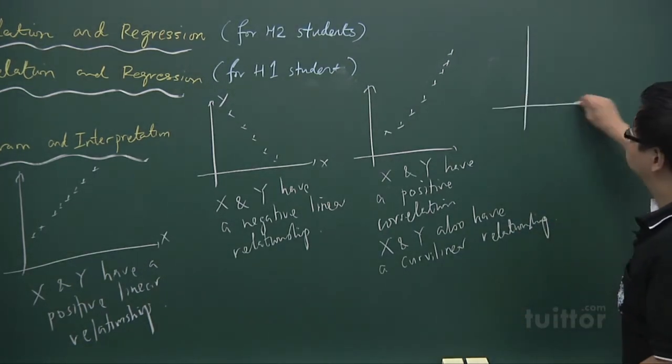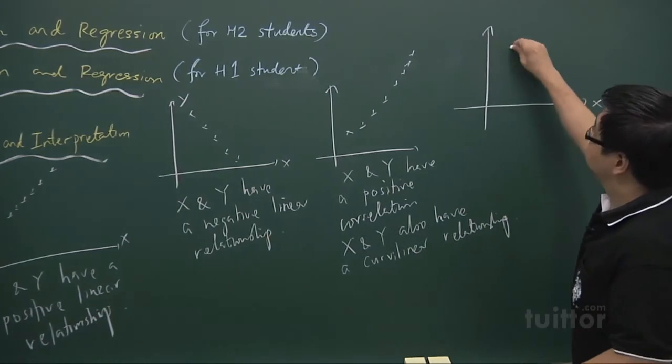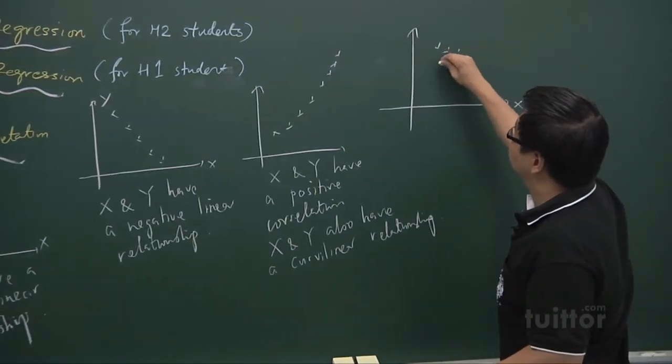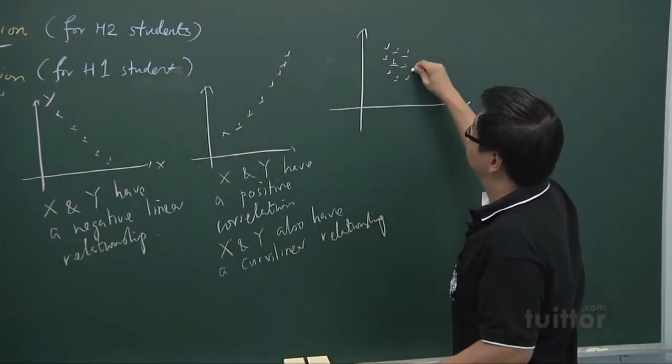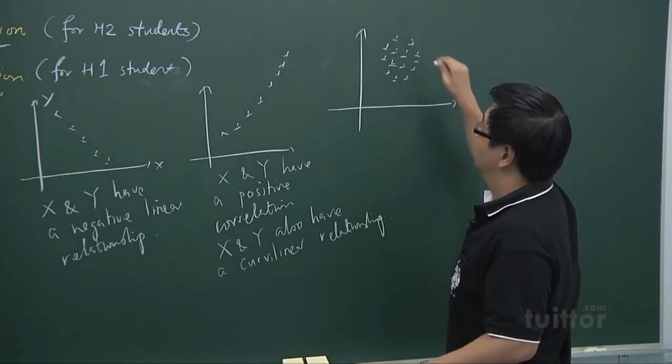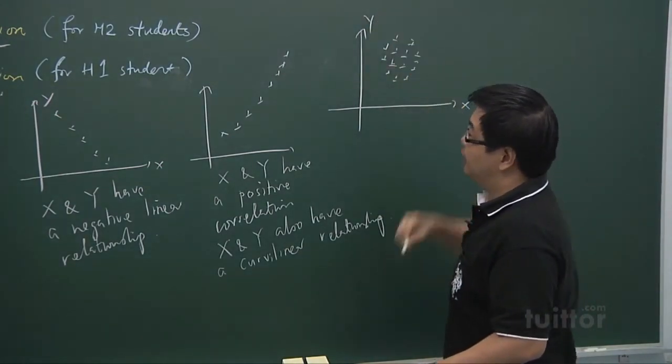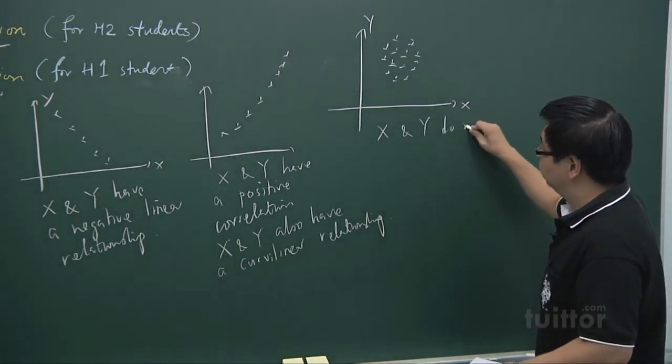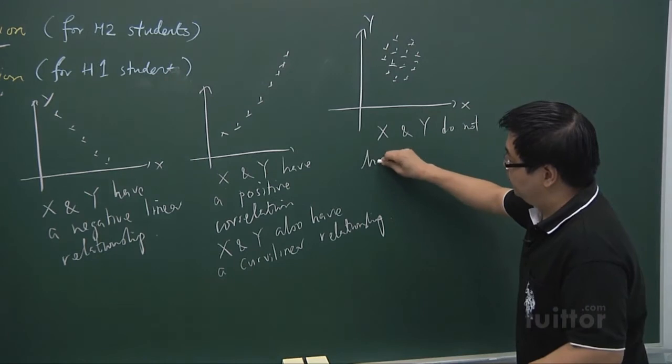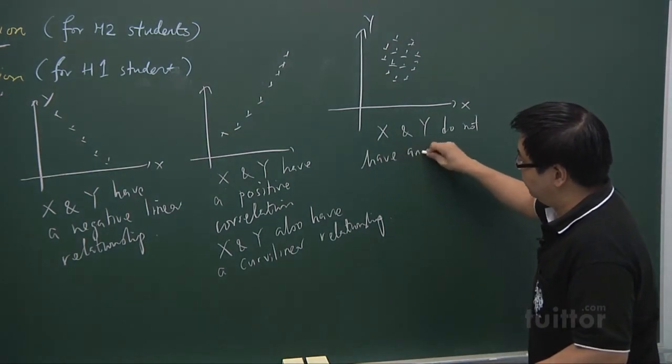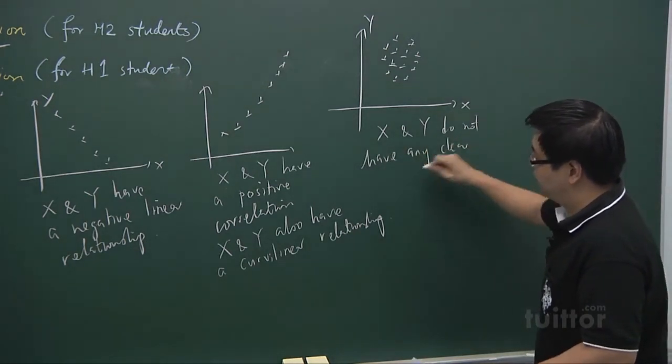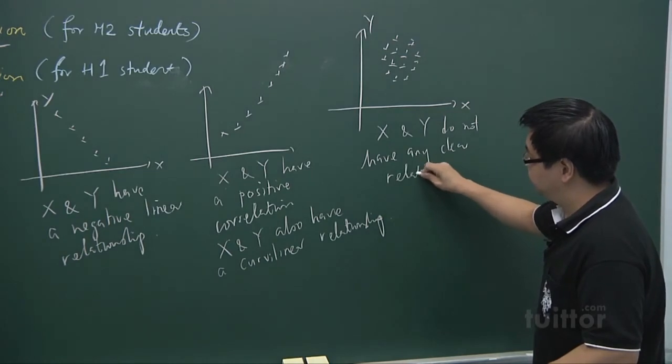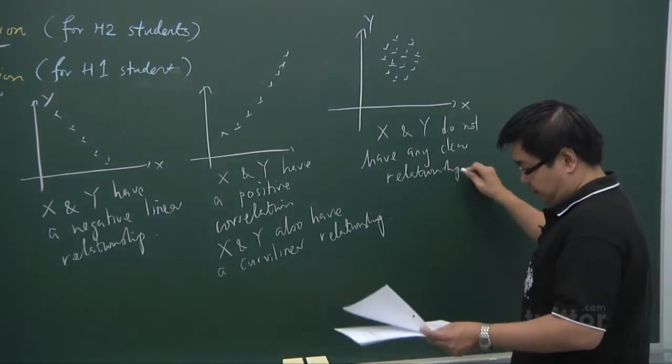And another example, where the points are all scattered everywhere. And then we say that x and y do not have any clear relationship.